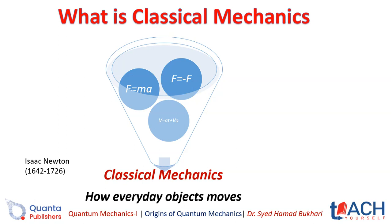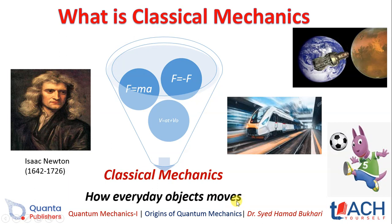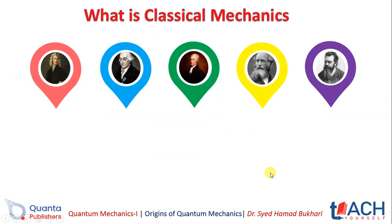All these things belong to classical mechanics. In general, it defines how objects move, behave, and react. Isaac Newton is basically the foundation — and Galileo also contributed a lot, along with many other scientists. Classical mechanics describes how every everyday object moves, from the motion of the Earth to the motion of a train or kicking a ball. We can study all objects' motions and behavior in classical mechanics.